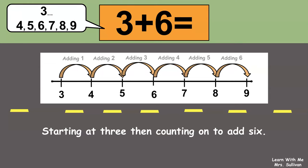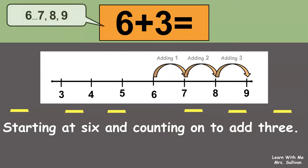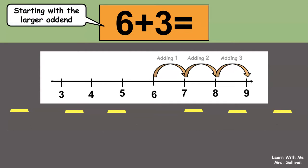Now let's look at the same equation after changing or commuting the addends. Now we'll be starting at 6 and counting on to add 3. 7, 8, 9. Did you notice a difference when starting with the larger addend?